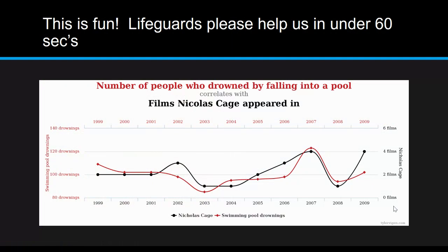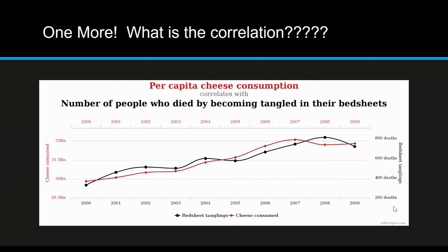Here are another couple of totally random examples. As you can see, they are relatively close in a relationship but definitely not showing causation. Just one more example: strong correlation, but they may not be causing an effect.